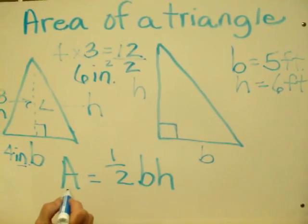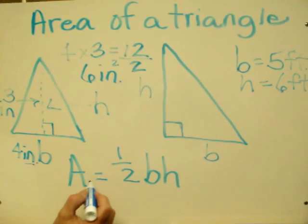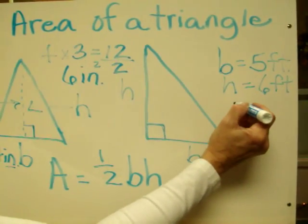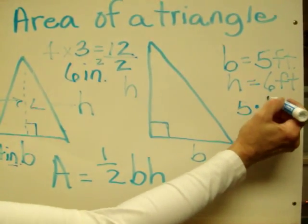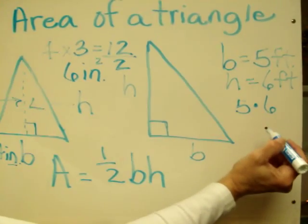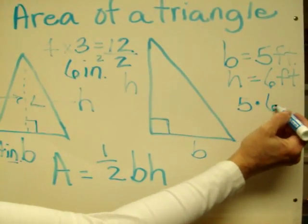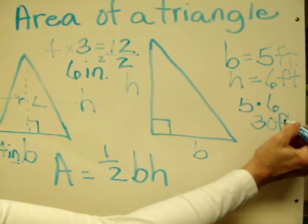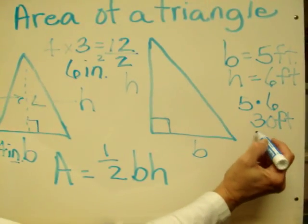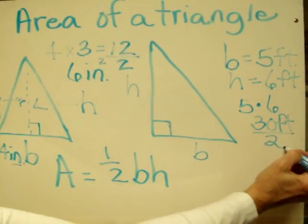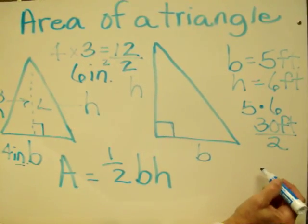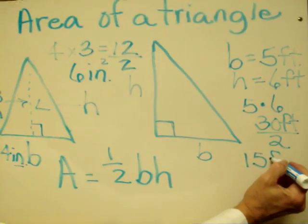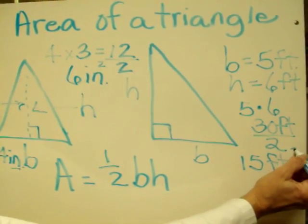Once again the area of a triangle says area equals one-half base times height. Five is our base, our height is six and you're noticing I'm putting a dot. That means to multiply in algebra. Five times six is thirty feet. But remember we have to take half of that so we're going to divide it by two. Thirty divided by two will give us an answer of fifteen. Our measurement is feet and we have to put the exponent of two.